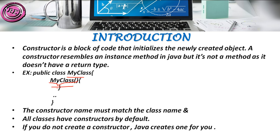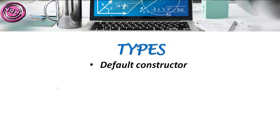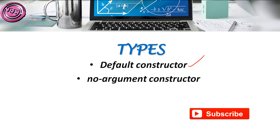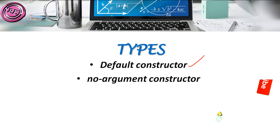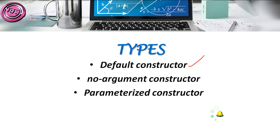Based on these points we divide constructors into three types. The first is the default constructor, which is called by the computer itself. The second is the no-argument constructor, where we don't have any arguments. The third is the parameterized constructor, where we give some parameters to the particular attributes — attributes being the variables used to take inputs and give outputs to the user.